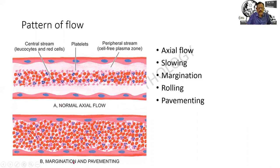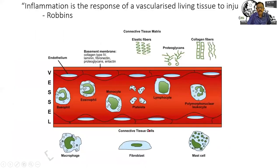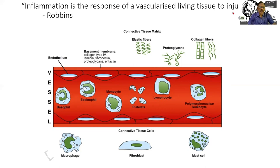This is a normal axial flow; here I am seeing margination and pavementing. Inflammation is the response of a vascularized living tissue to injury — by Robbins. Please remember these words. When you cut the nail, there is no pain or inflammation. Similarly, when you do something on a resected organ, there is no change. It has to be a vascularized living tissue, and the reaction is called inflammation.